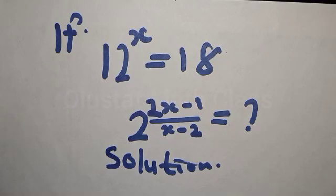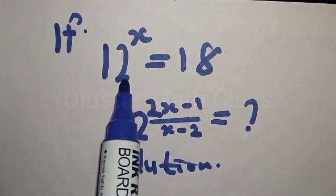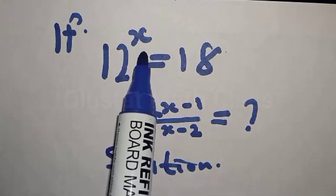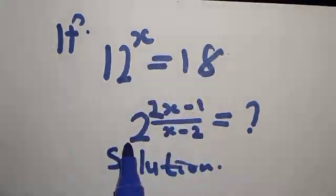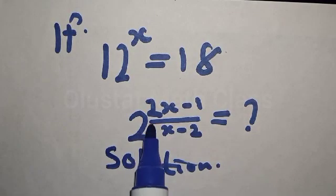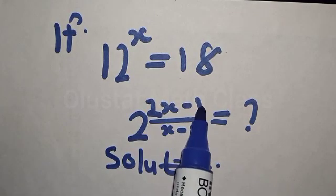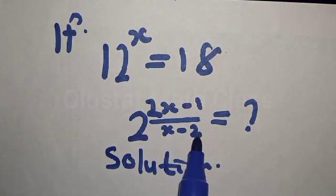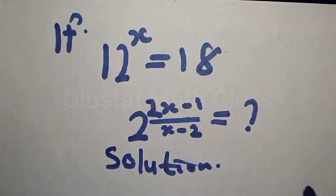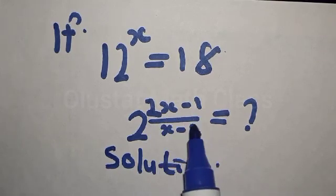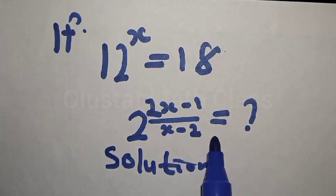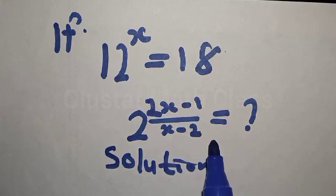Hi everyone, welcome to my class. In this class we want to look at how to solve this mathematics problem. We have 12 raised to power x is equal to 18, then the question is: 2 raised to power (2x minus 1) over (x minus 2) is equal to what? So we don't know the value of 2 raised to power (2x minus 1) over (x minus 2).